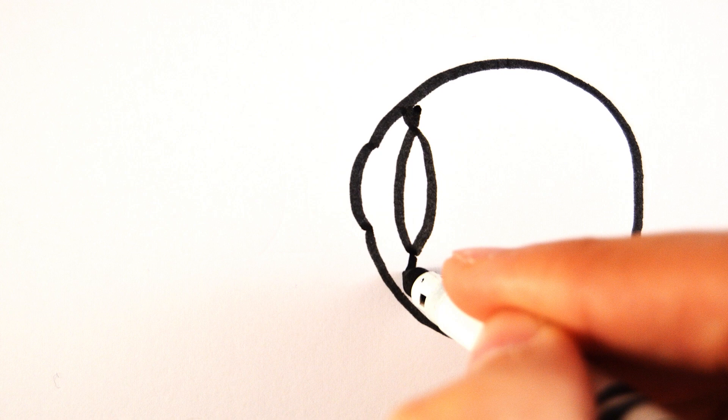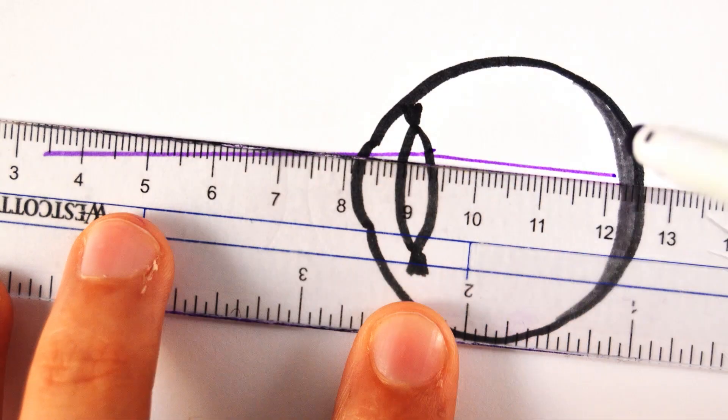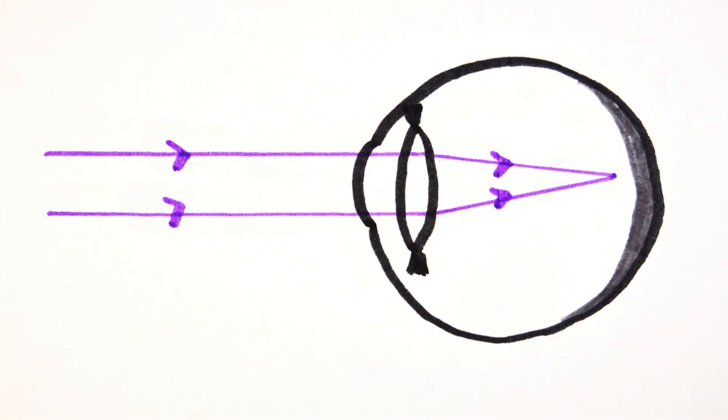This is caused by one of two reasons. Firstly, the eyeball could be elongated such that the light gets focused in front of the retina, which produces a blurry image.